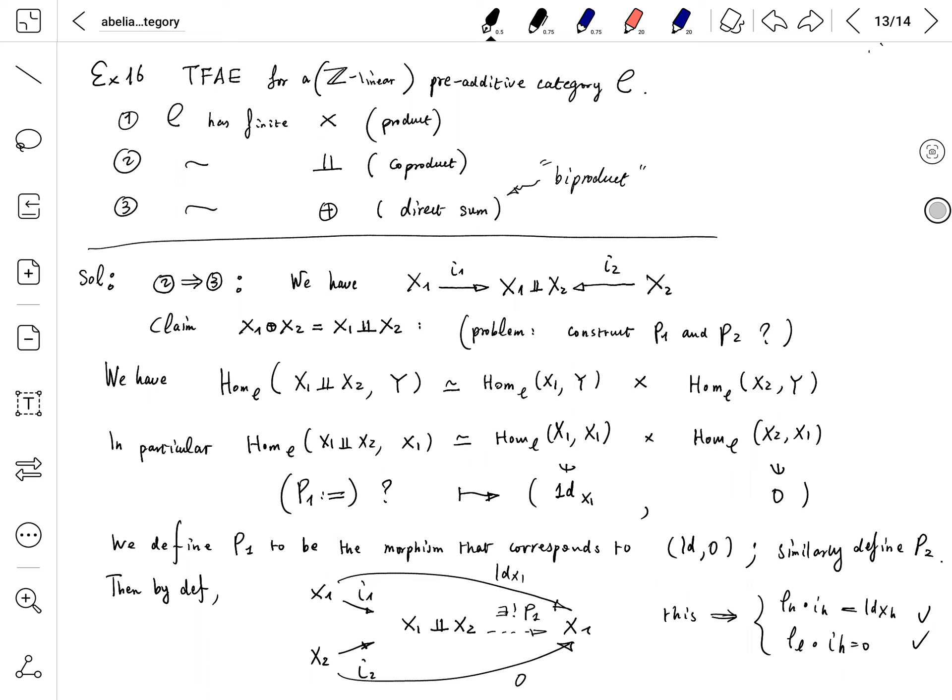We're only proving the case of a pair. Suppose we have coproduct for X1, X2, denoted by X1 coproduct X2. This gives us two canonical morphisms, I1 and I2, which we will use as the two embeddings in the definition of direct sum.